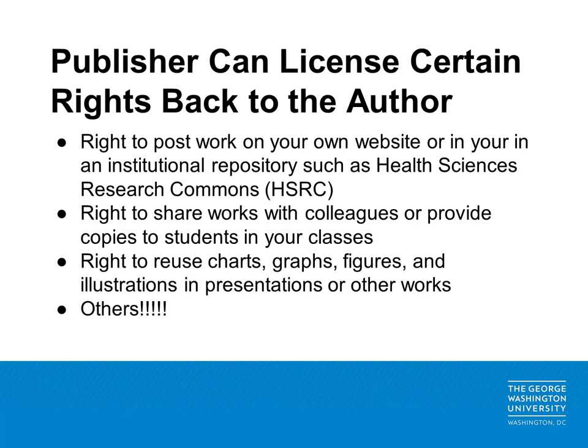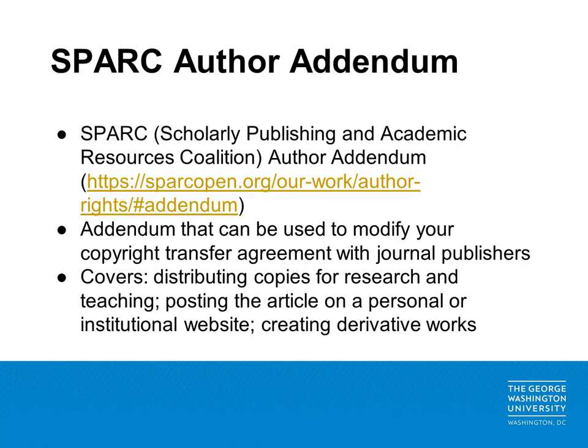There are a number of rights you can ask your publisher to license back to you. For example, you can ask for the right to post some version of your work on your own website, or to archive a version of your work in an institutional repository. The Himmelfarb Library has an institutional repository called Health Sciences Research Commons. You can also license back the rights to share your work more broadly with colleagues, or to reuse charts, graphs, figures, and illustrations in presentations or other works. Another option is the SPARC author addendum — SPARC stands for the Scholarly Publishing and Academic Resources Coalition. On the website sparcopen.org, they have a one-page addendum that can be used to modify the copyright transfer agreement with publishers, covering things such as distributing copies for research and teaching, posting the article on a personal or institutional website, and creating derivative works.